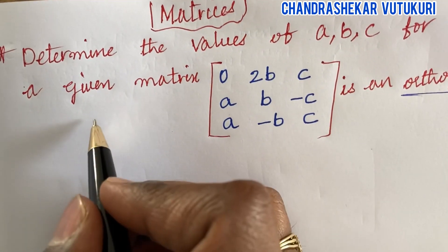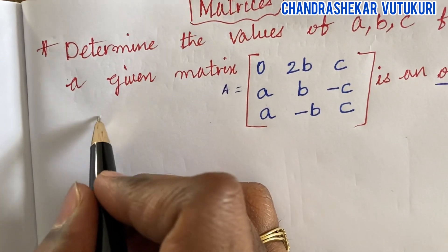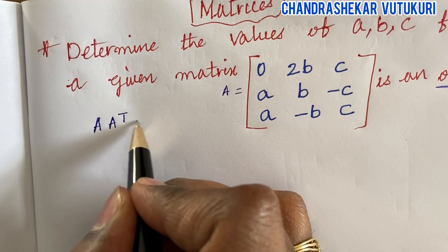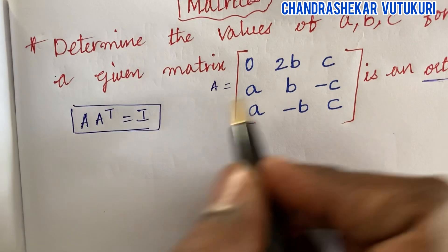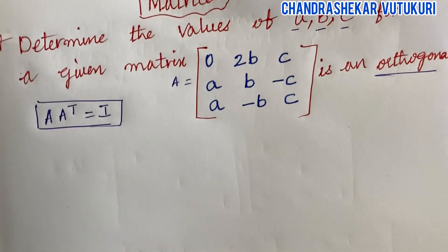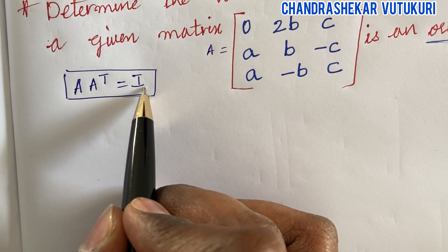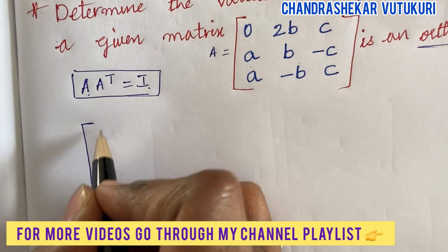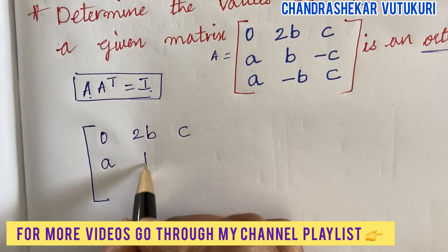What is an orthogonal matrix? If the given matrix A is an orthogonal matrix, it should satisfy the condition that A times A transpose equals the identity matrix. Here it is said that it is an orthogonal matrix, and we are supposed to work out the values of a, b, c using this relation. The given matrix A is: zero, 2b, c in the first row; a, b, minus c in the second row; a, minus b, c in the third row.